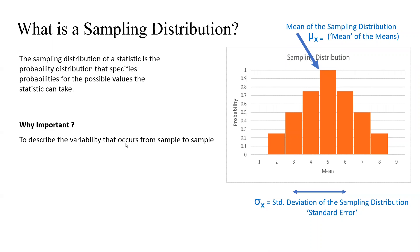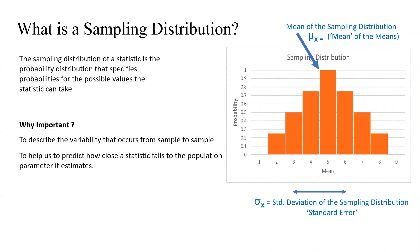Sampling distribution also helps us understand how close our estimate is to the population parameter. Since we don't know the population parameters and are only estimating them, the error could be small or high. It's important to know how confident we are in that estimation and how much we can trust it. That is something this sampling distribution will help us with.